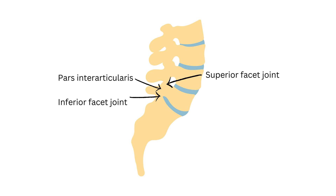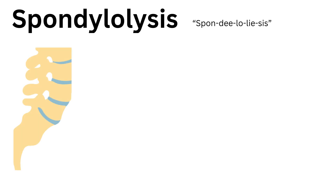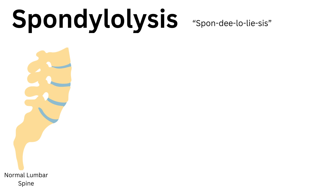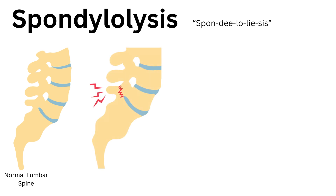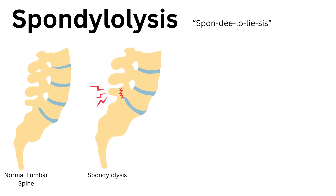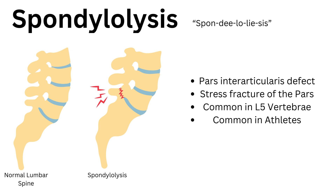Now that we have explored the anatomy in question, let's take a look at the pathologies. Spondylolysis is when there is a stress fracture of the pars interarticularis — a fracture of the bridge connecting the two facet joints together. Spondylolysis is also commonly referred to as a pars defect. If we look at the diagram on the right hand side, we can see the red sharp jagged lines which represent the fracture of the pars. This pathology is most commonly seen in the L5 vertebra and is very common in athletes involved in high level sporting activities.